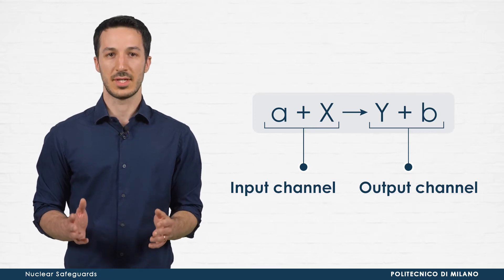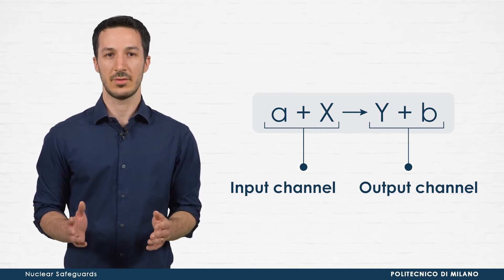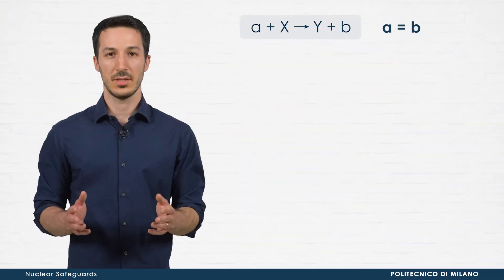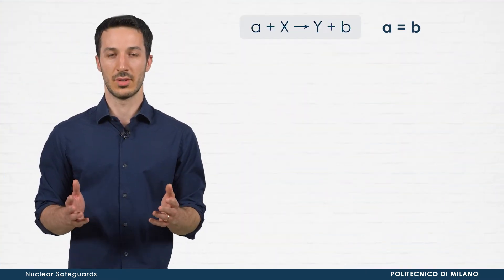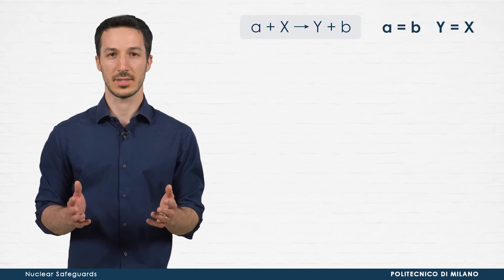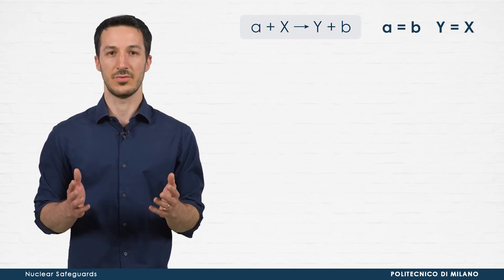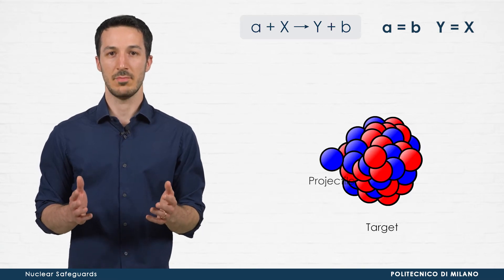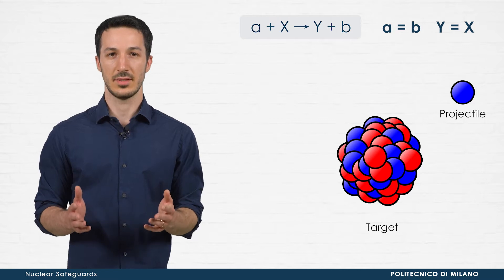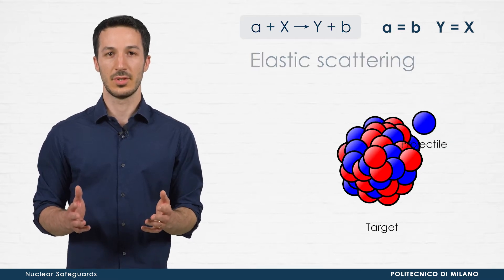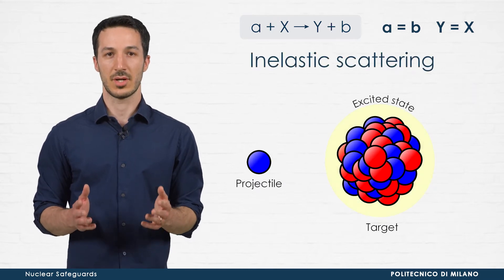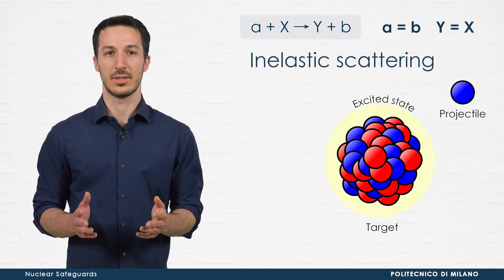Nuclear reactions present an extremely varied phenomenology, but they can be identified by some general groups. When B is equal to A and therefore Y is equal to X, the reaction is defined as diffusion or scattering. Moreover, if Y and B are produced in their ground state, the scattering is called elastic, while it is defined inelastic if the products are generated in an excited state.